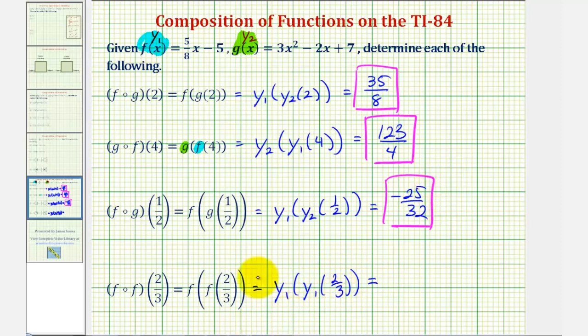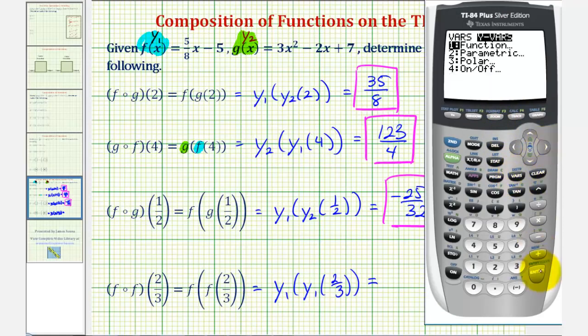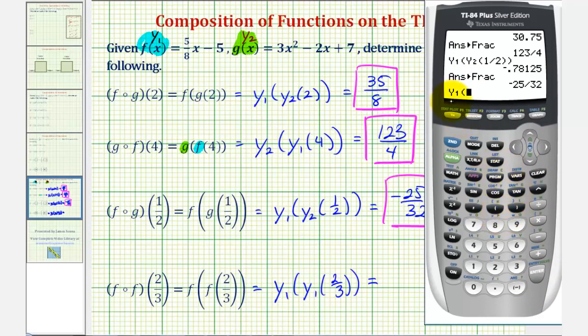So one more time, back to the calculator. Vars, right arrow. Enter. Enter for y sub one. Open parenthesis. We want y sub one again. So vars, right arrow. Enter. Enter. Open parenthesis. The input of two-thirds. Close parenthesis. Close parenthesis. And enter.